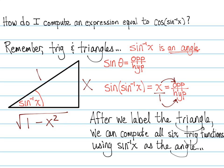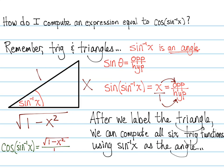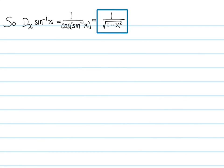After labeling the triangle, we can compute all of the trig functions applied to sine inverse of x. In particular, cosine of sine inverse of x — cosine is adjacent over hypotenuse — which is the square root of 1 minus x squared over 1. So cosine of sine inverse of x is just the square root of 1 minus x squared. Therefore, the derivative of sine inverse of x is 1 over the square root of 1 minus x squared.